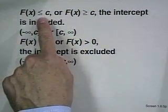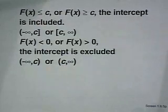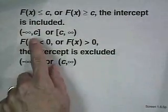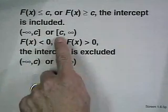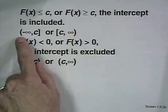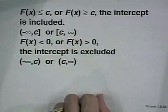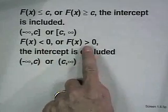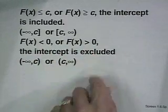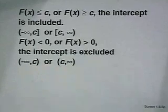If it's a less than or equal to or greater than or equal to inequality, then we'll include the intercept, and in interval notation we'll use square brackets. We never use square brackets at infinity because you can never actually get to infinity. If it's a strictly less than or strictly greater than inequality, the intercept is excluded and we use parentheses instead.